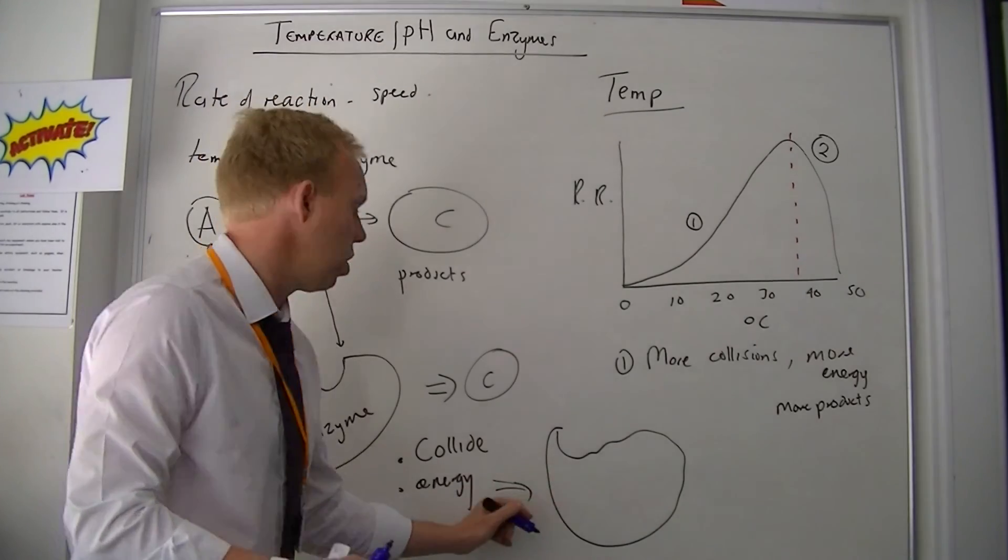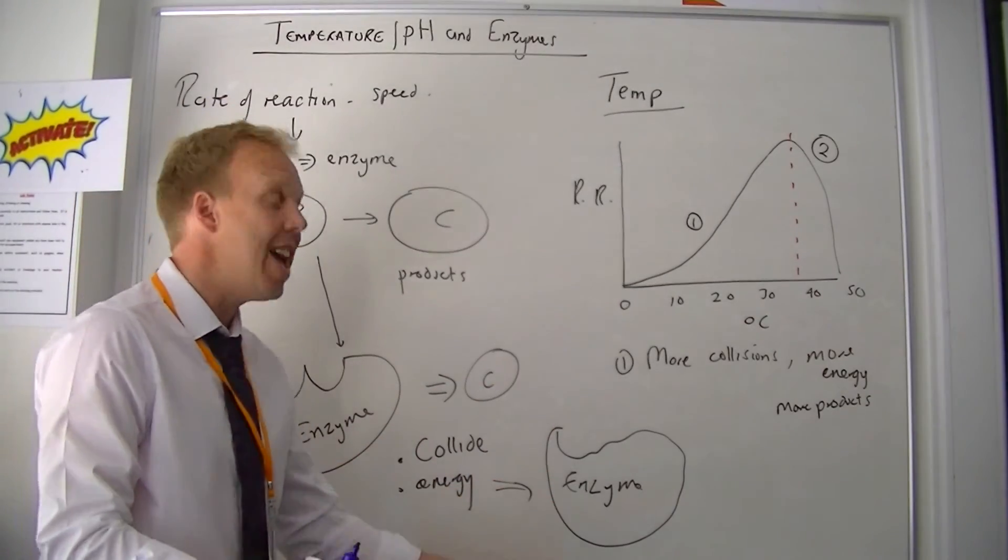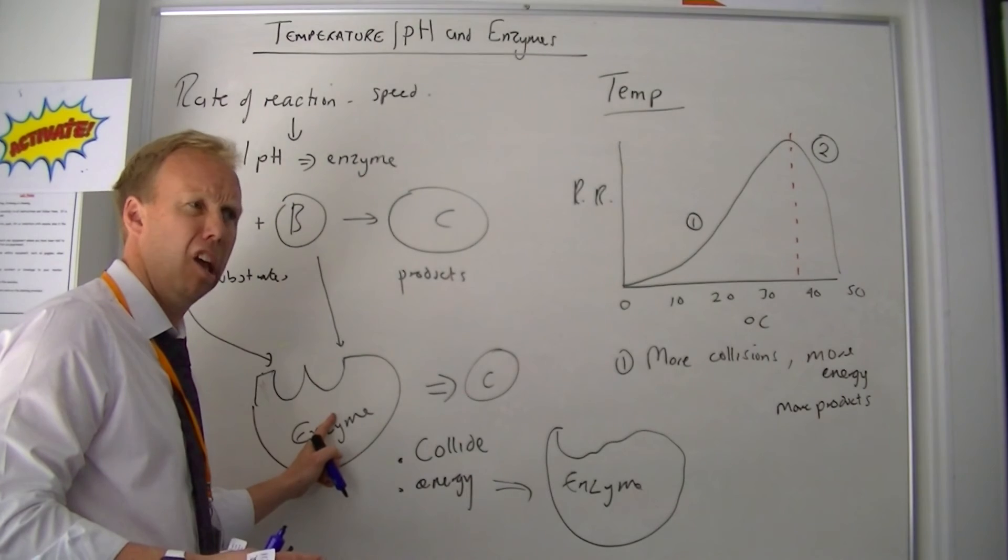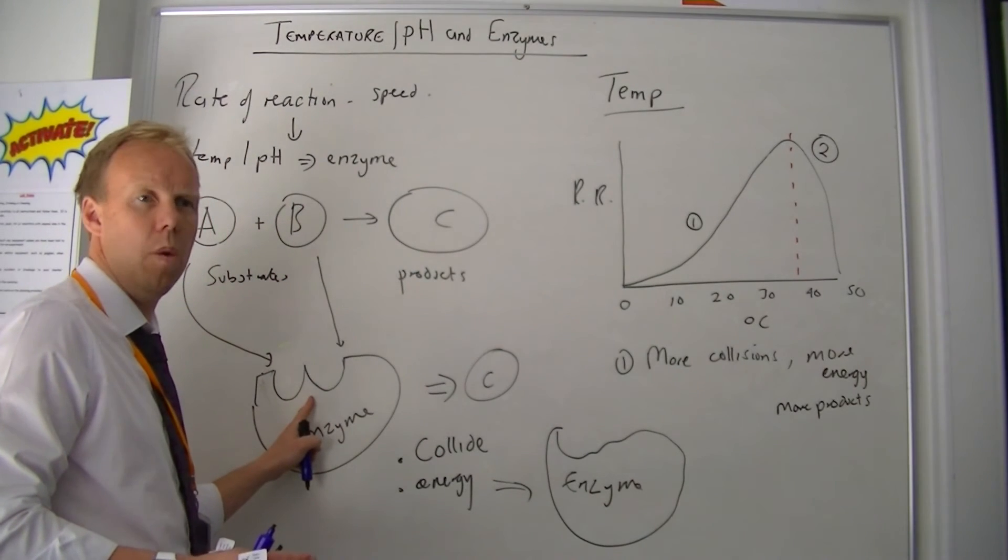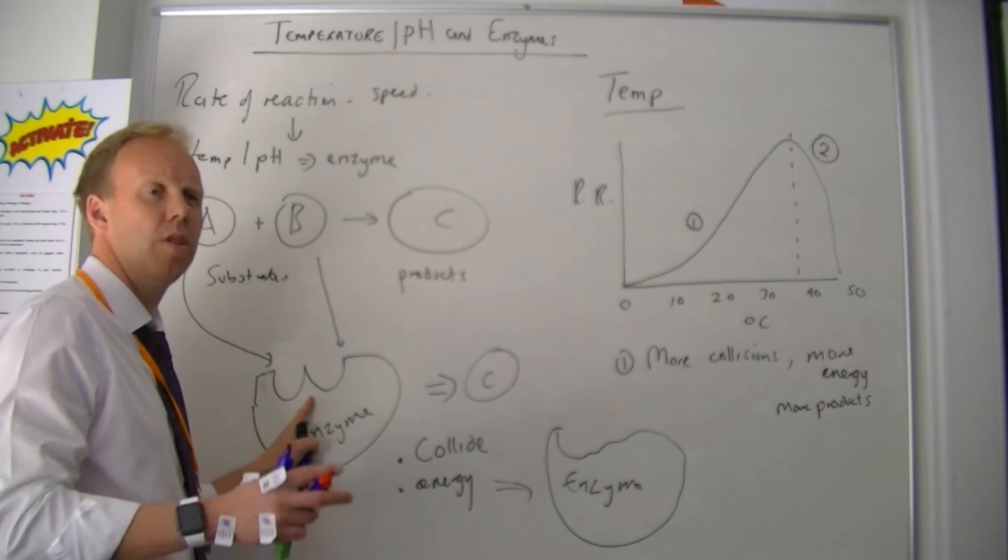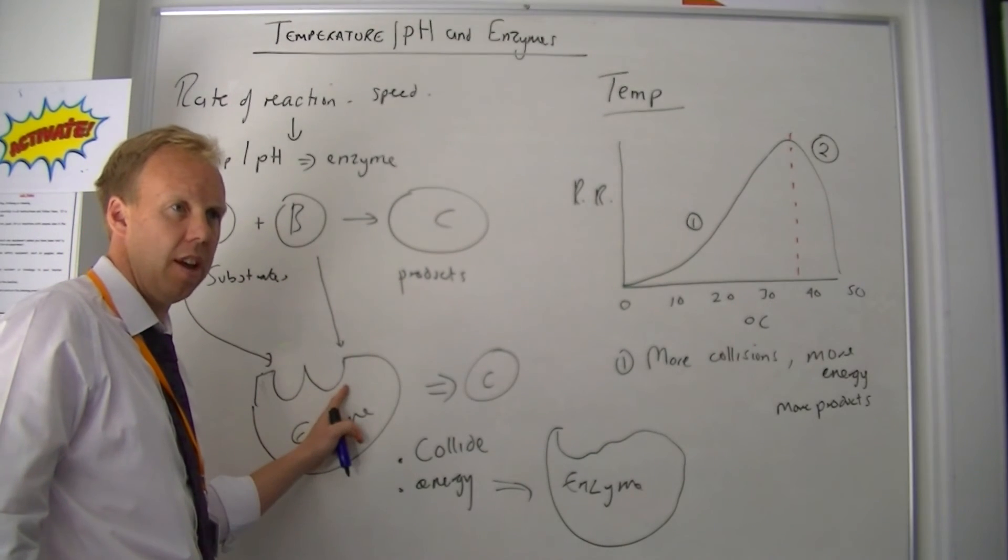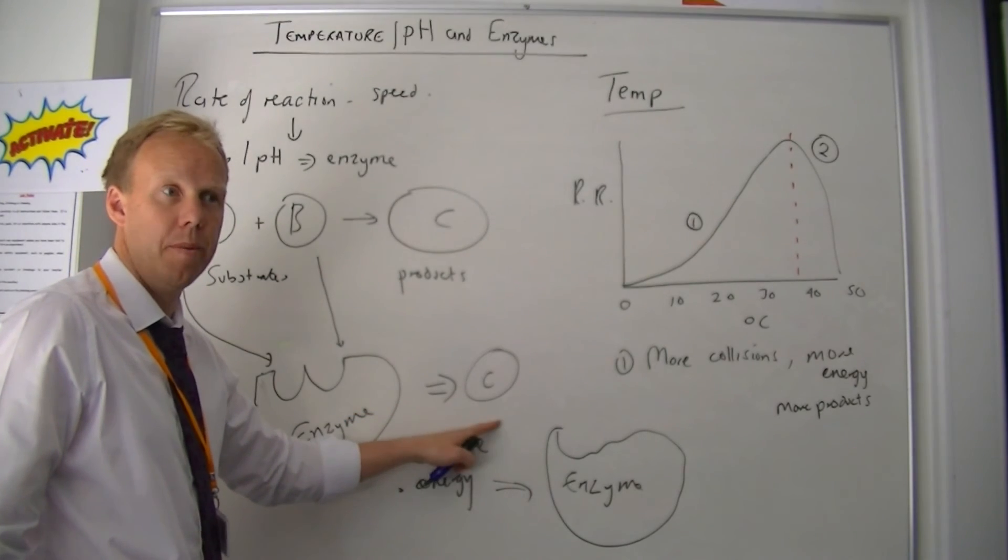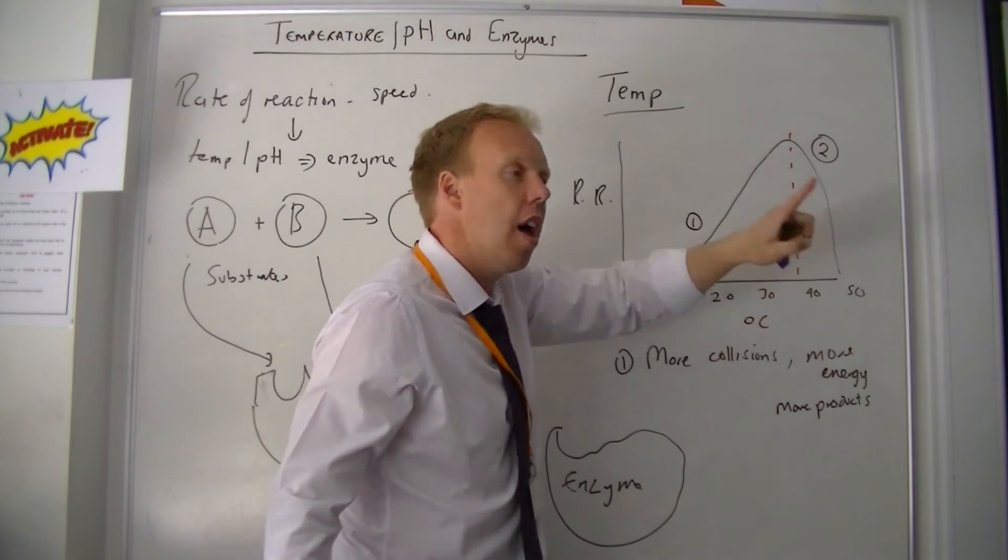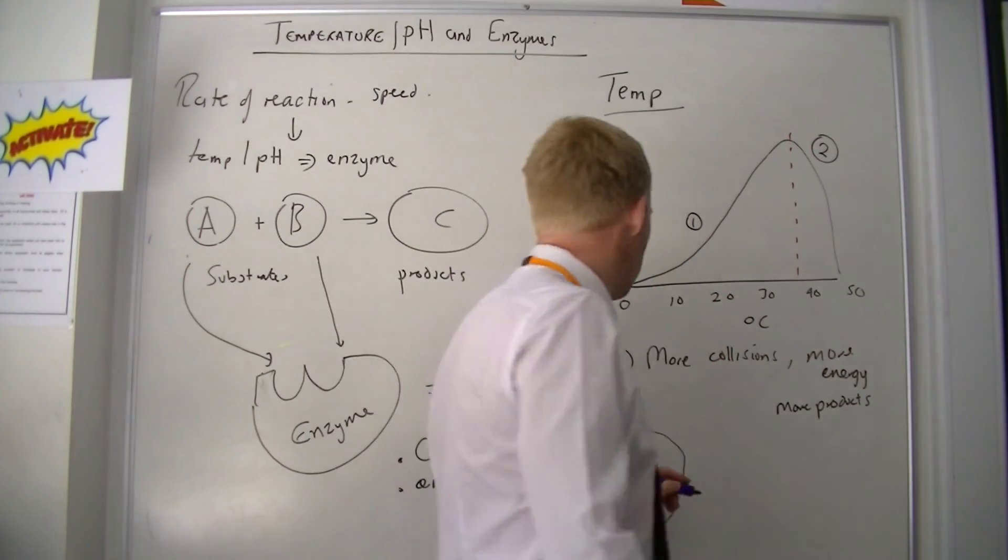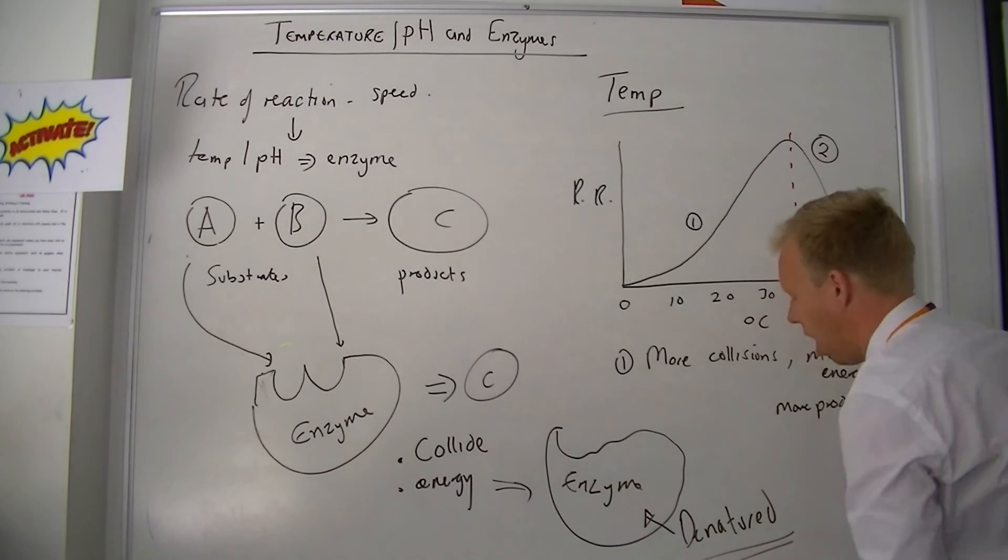Because you put so much energy in, it's actually broken the bonds of the enzyme. If the enzyme has lost its shape, what can happen? The substrates can no longer bind to the active site, and therefore we get no more product and our rate of reaction drops. And this is called a very special word: when the enzyme changes shape like that, it is what we call denatured.